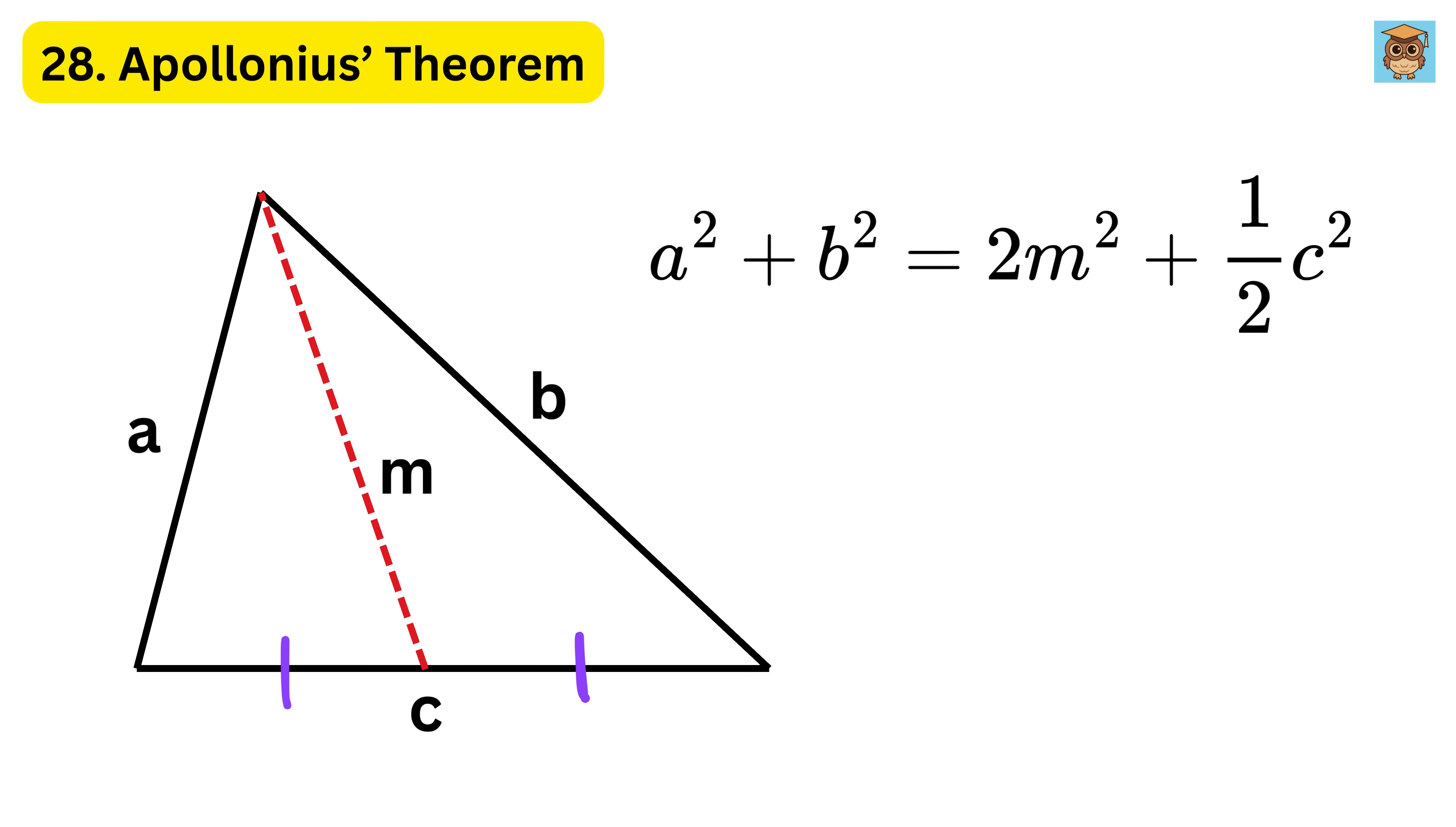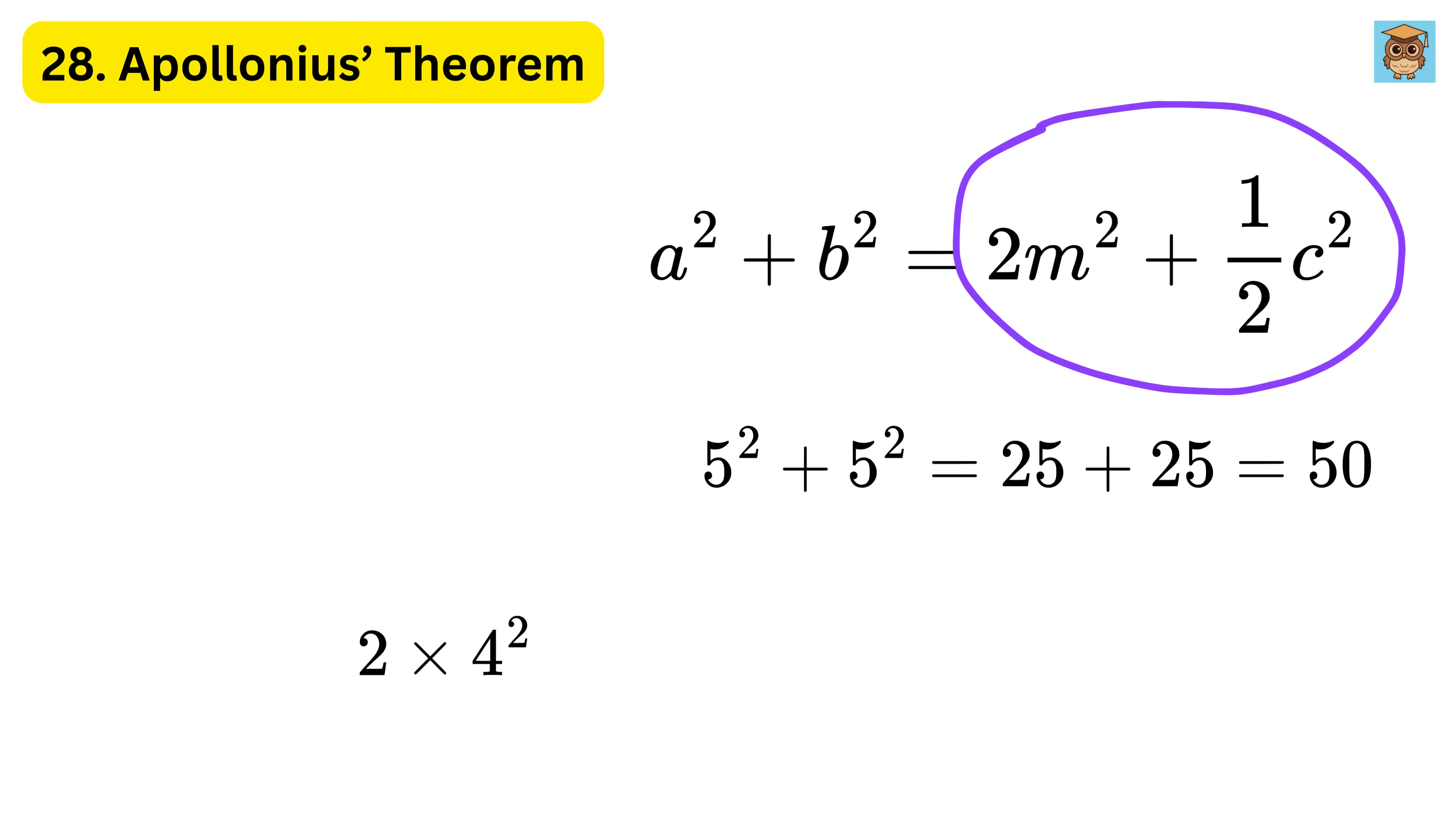For example, if sides A and B are 5 and 5, and side C is 6, and the median to C is 4, then 5 times 5 plus 5 times 5 is 25 plus 25, which is 50. Now check the other side. 2 times 4 times 4 is 32, and half of 6 times 6 is half of 36, which is 18. So 32 plus 18 is also 50.